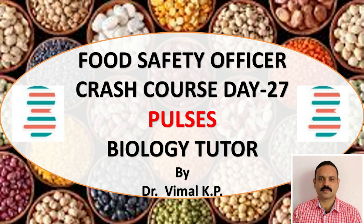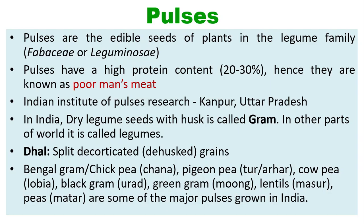Pulses have a high protein content of 20 to 30 percent and they are known as poor man's meat.